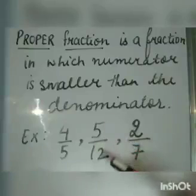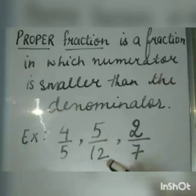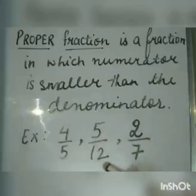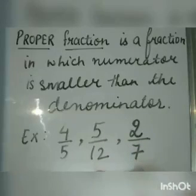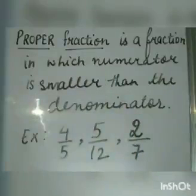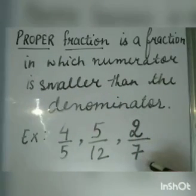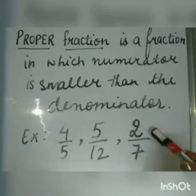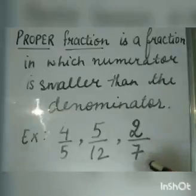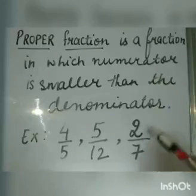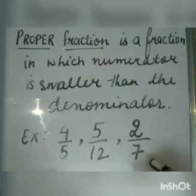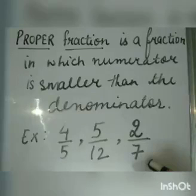Similarly, 5 upon 12. Here, 5 is smaller than 12 — that is, the numerator is smaller than the denominator — so 5 by 12 is another example of a proper fraction. Similarly, 2 upon 7: 2 is the numerator and 7 is the denominator. The numerator is smaller than the denominator, so this is also an example of a proper fraction.